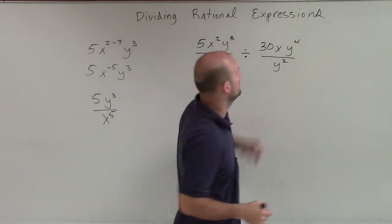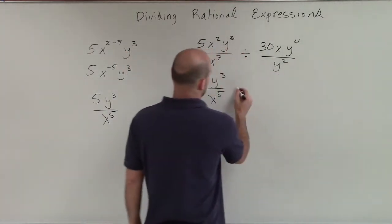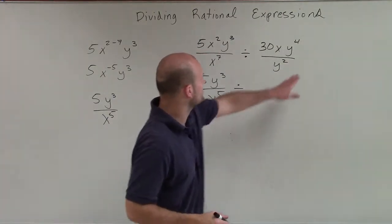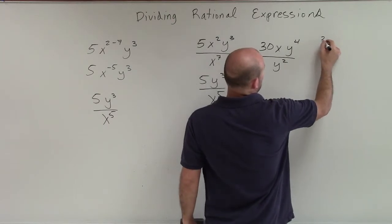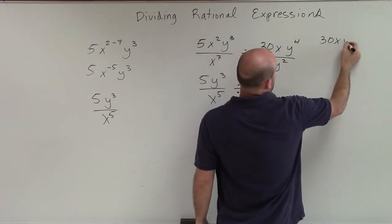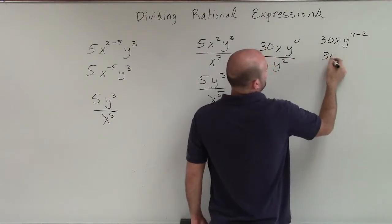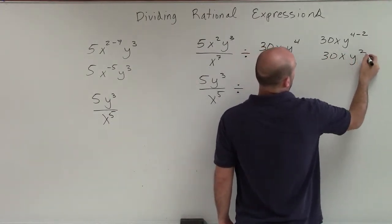So that's going to be our new problem, 5y cubed divided by x to the fifth. And I'll work out this problem divided by. Now I'll work out this one again. Just simplify it over here. So it'd be 30xy to the fourth minus 2.